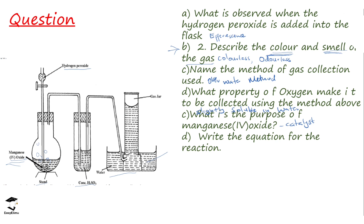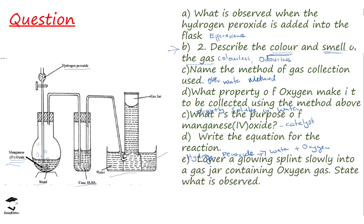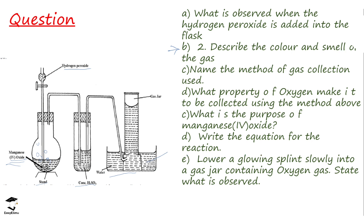Write the equation for the reaction: hydrogen peroxide decomposes to form water and oxygen gas. Finally, the question asks: if you lower a glowing splint slowly into a gas jar containing oxygen, what is observed? This is the test for oxygen. You lower a glowing splint into the gas jar and the glowing splint relights or rekindles. This confirms that the gas collected is oxygen.